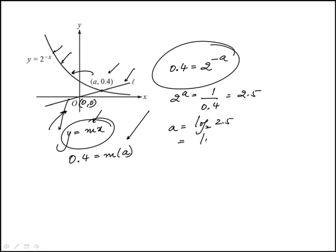Actually, I'm going to do natural log, log 2.5 over natural log of 2. So I'm changing base here. So I can compute what a is from this. So 2.5 natural log divided by natural log of 2. So this is 1.322.